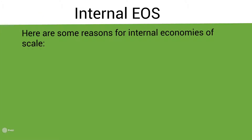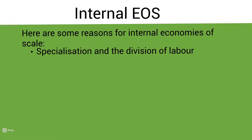Here are some examples of internal economies of scale. The first is specialisation and the division of labour. The larger a firm becomes, the more opportunity there is for specialisation and division of labour. Specialisation requires less training because workers only need to be trained in one job, and it allows them to become more efficient, producing a greater amount of output per unit of input. There is a separate section on specialisation and division of labour that explains more clearly why it can reduce costs and increase output.